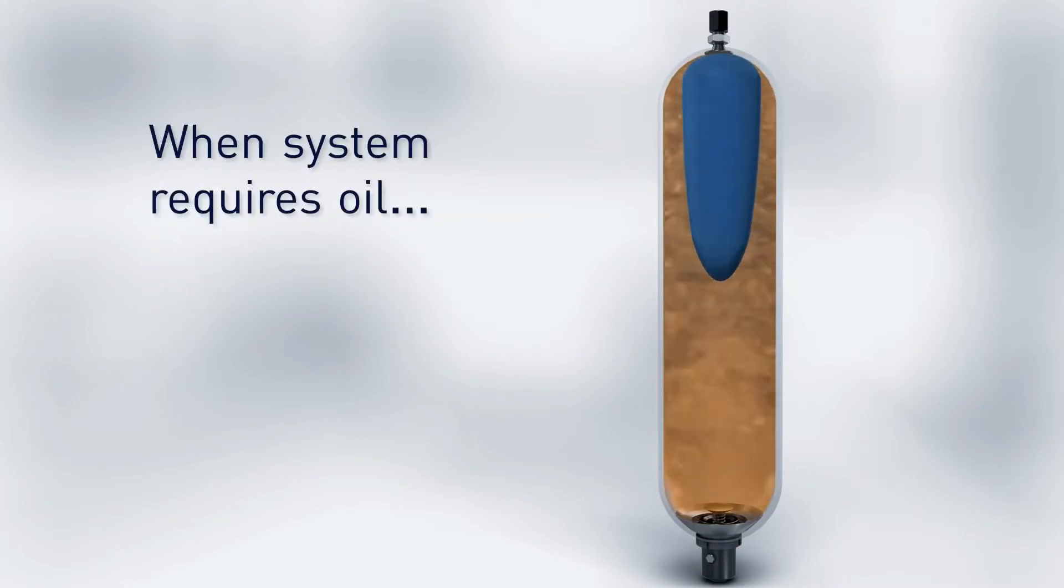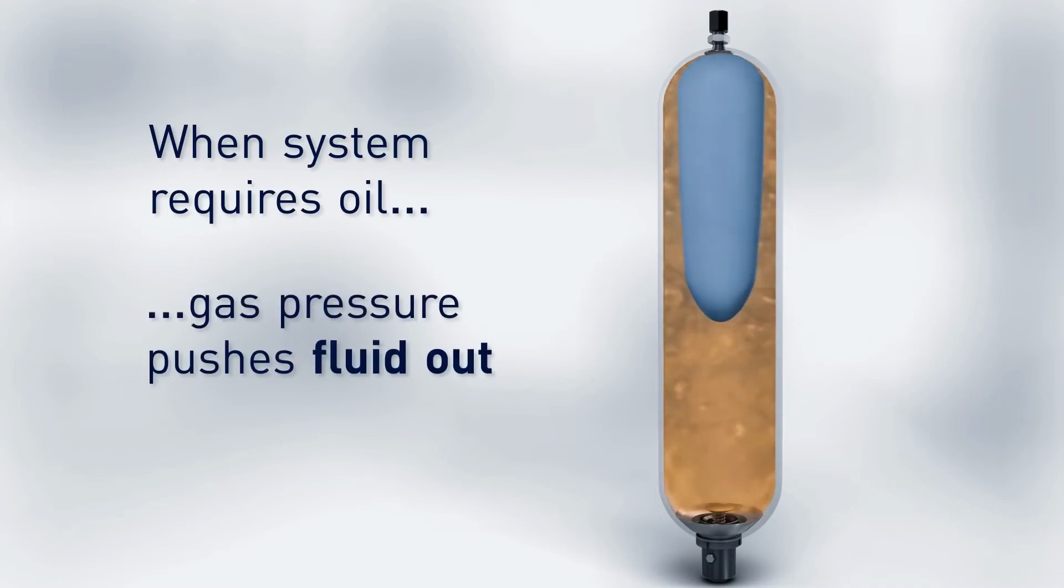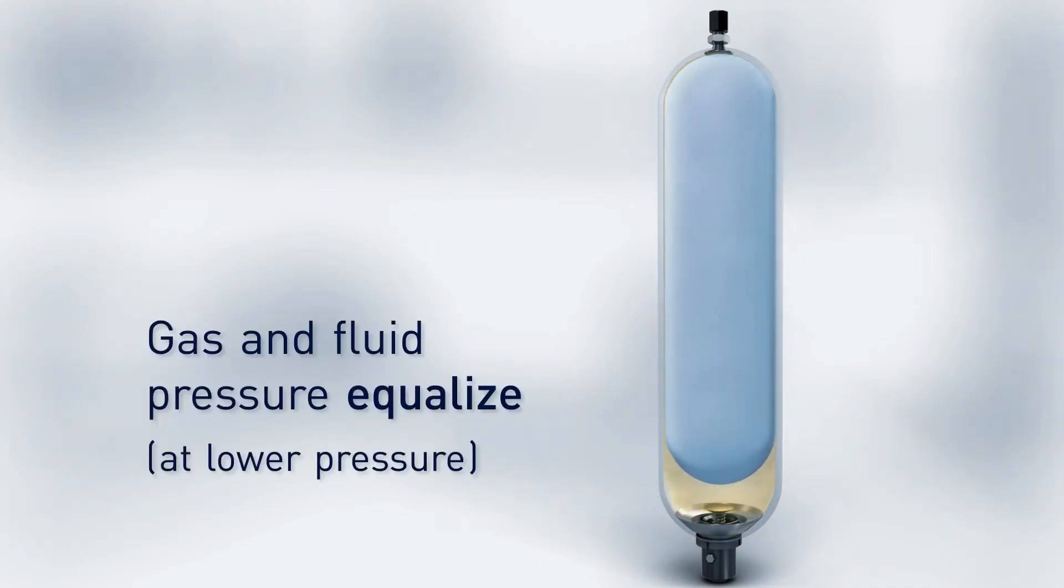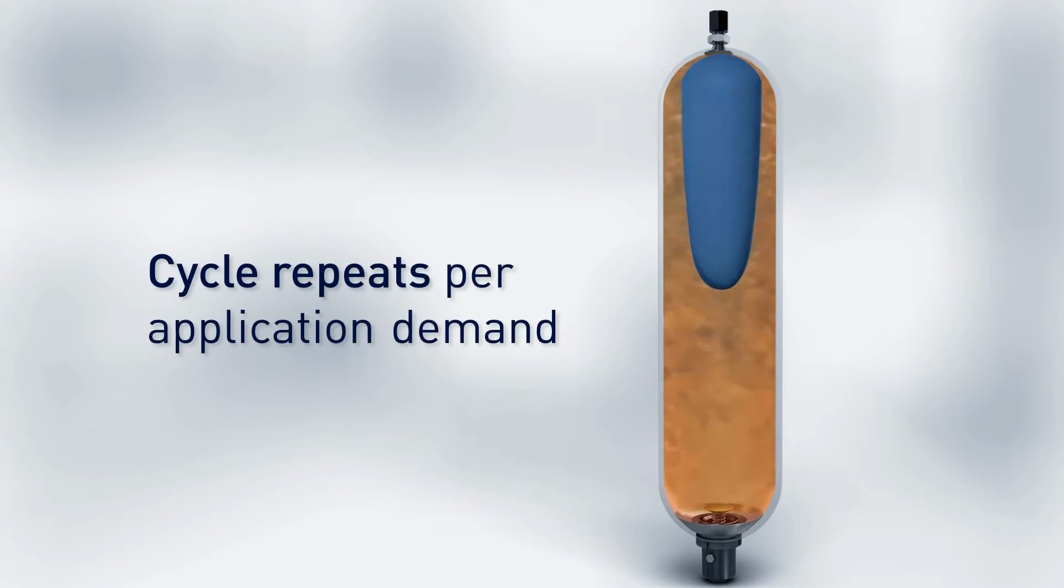Inert gas is used because oxygen and oil can form an explosive mixture when combined under high pressure. As the volume of the compressed gas changes, the pressure of the gas and the pressure on the fluid change inversely.